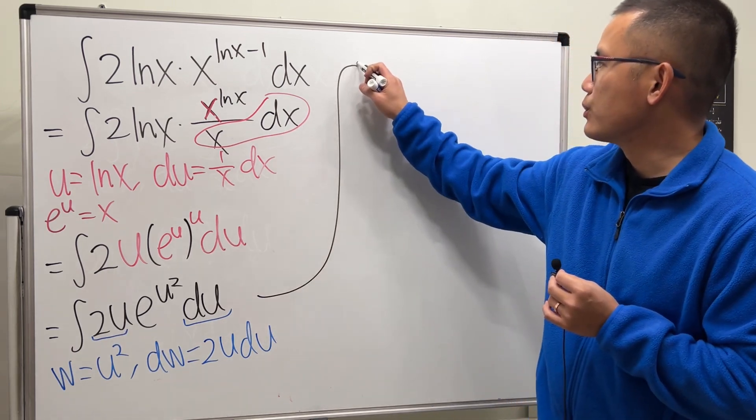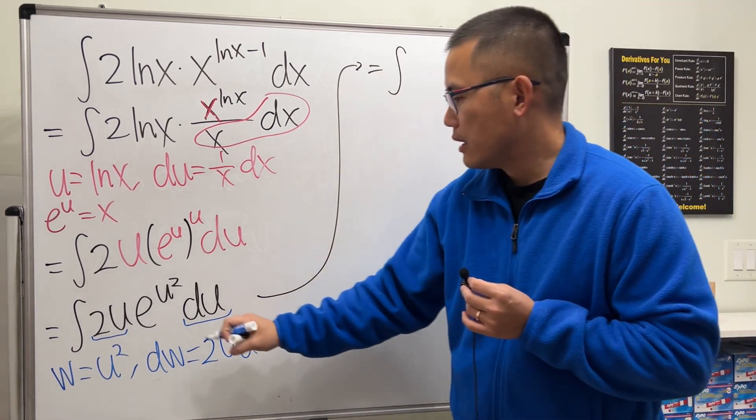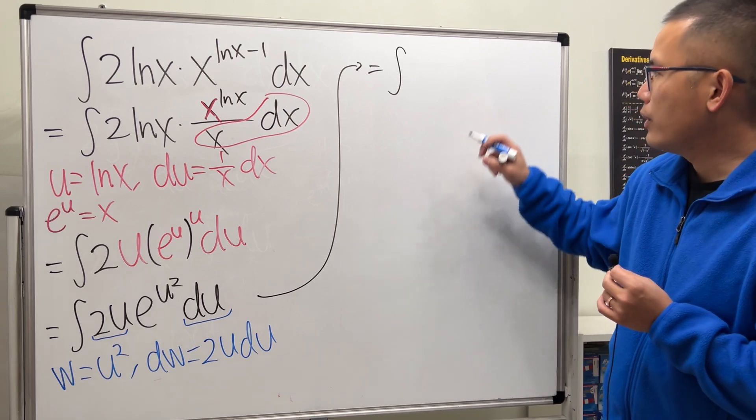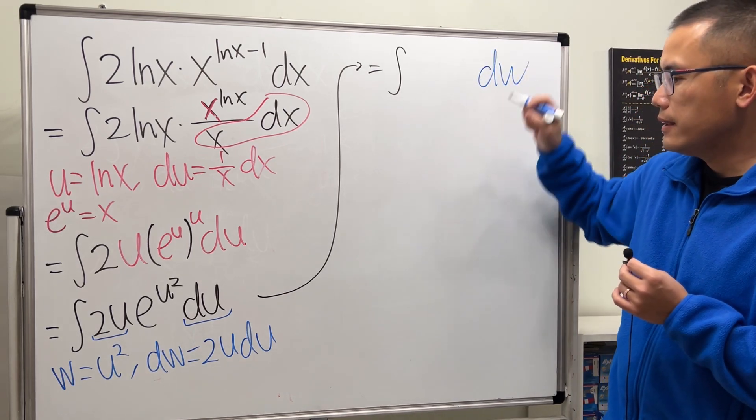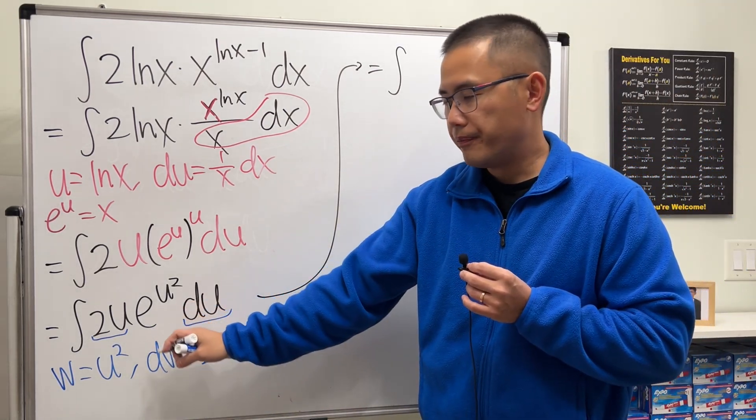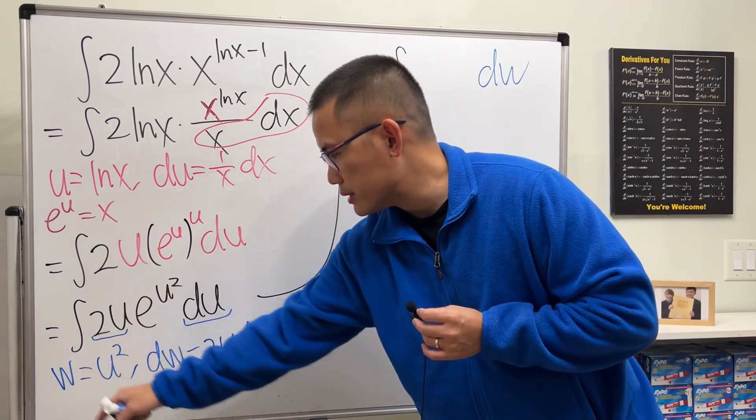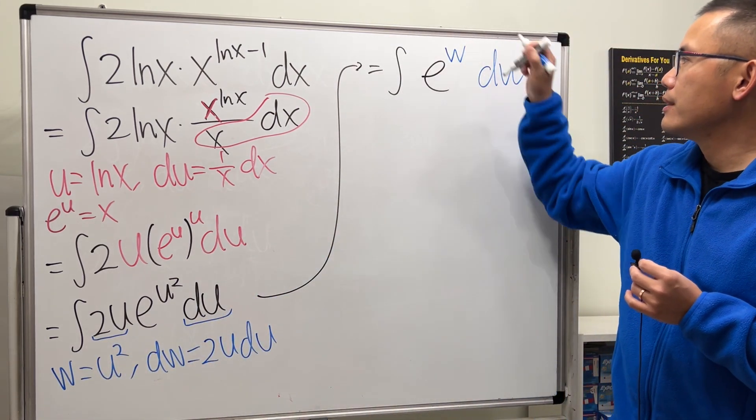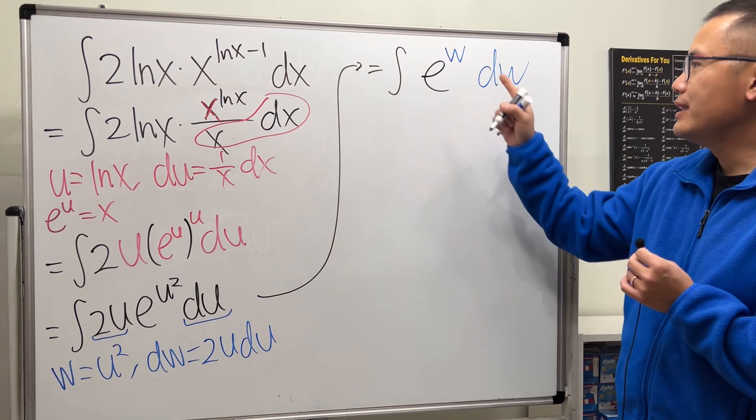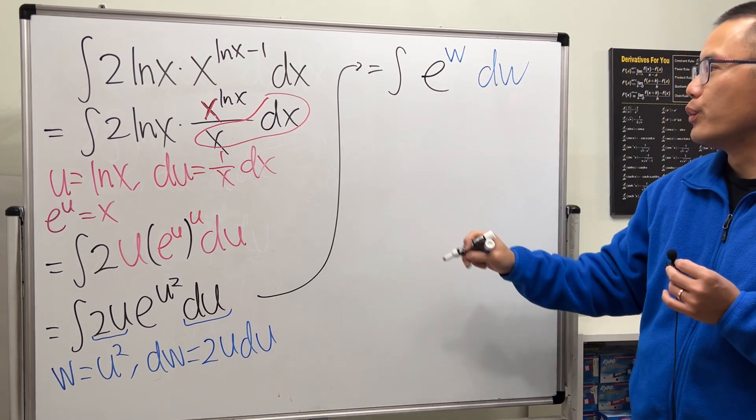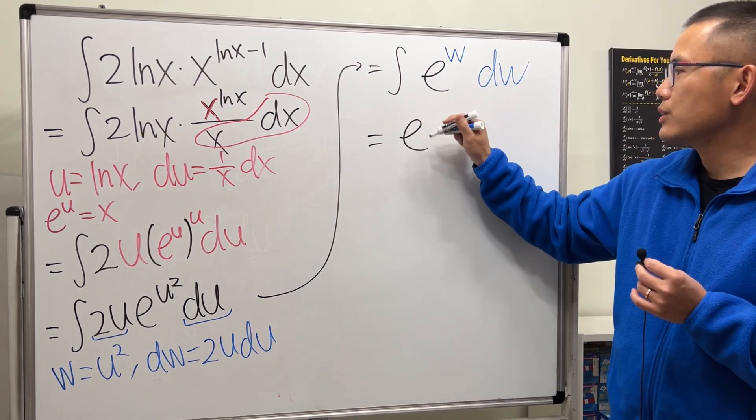Therefore, you will see that this becomes the integral, that's just dw, I will put that all the way at the end, and then we have e to the u squared, which is just e to the w. Now integrating e to w in the w world will just get e to the w.